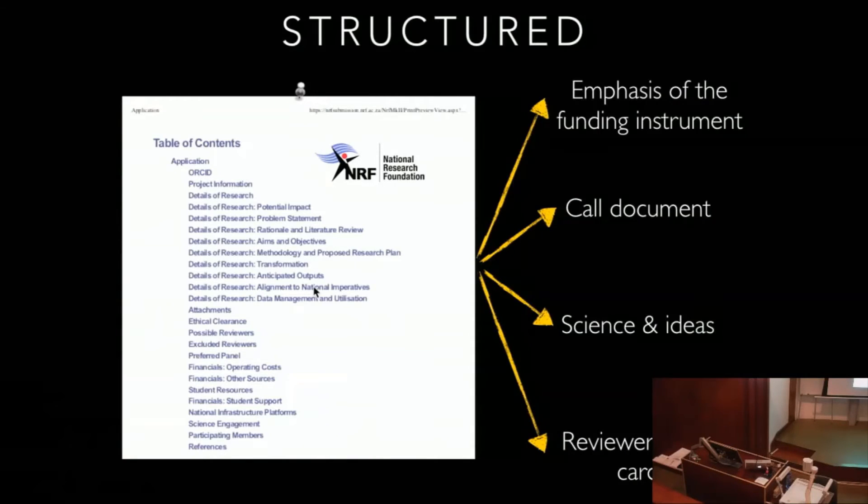If we think about alignment to national imperatives, some of these relate to the government strategic goals. Some of that may be upskilling young people. If you're applying for NRF research funding, you are wanting to upskill yourself—maybe going to a laboratory that doesn't exist in South Africa. You're upskilling yourself. So a lot of these national imperatives, you have to understand what the national imperatives are or what they mean by transformation.